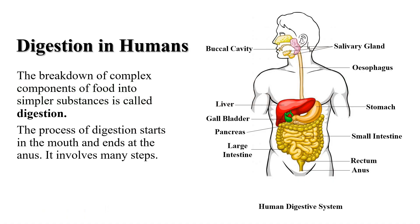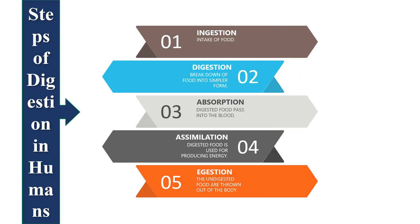As we read about digestion in the previous video, the breakdown of complex components of food into simpler substances is called digestion. The process of digestion starts in the mouth and ends at the anus. It involves many steps, and the main steps of the digestion process are ingestion, digestion, absorption, assimilation, and egestion.